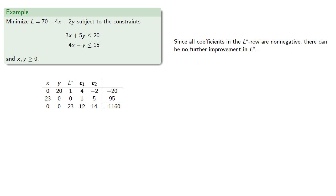And since all coefficients in the L star row are non-negative, there could be no further improvement in L star. So the greatest value of L star will be, and since L star is negative L, this means that the least value of L is...